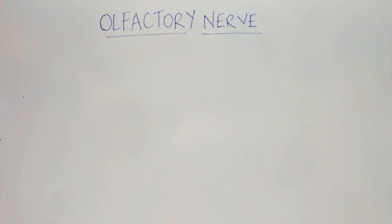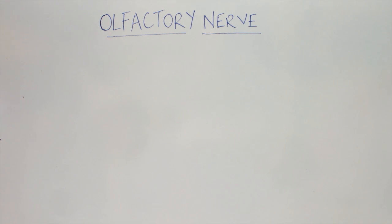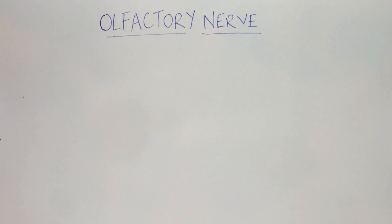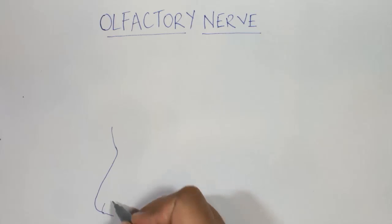In this video we will discuss the olfactory nerve. The olfactory nerve, or cranial nerve one, is associated with the sense of smell and starts from the nose and ends into the primary and secondary olfactory cortex.